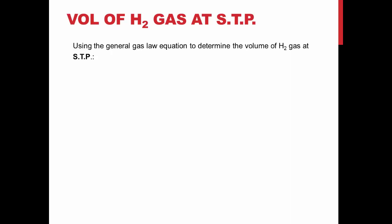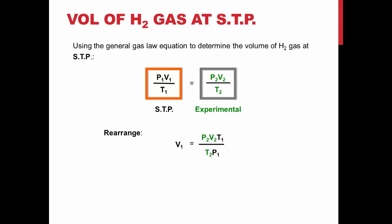The volume of hydrogen gas at standard temperature and pressure can be found by comparing the values of the gas at STP to your experimental values and solving for V1 as shown.